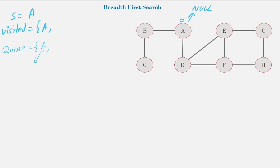Now we start the algorithm. The first step is to pop the first element of the queue, which is A. We then traverse all adjacent vertices of A. The first adjacent vertex is B, so we mark B as visited and add it to the visited list. We calculate the level of B as the level of A plus one, so level of B is 1. The parent of B is A. Finally, we add B to the queue.